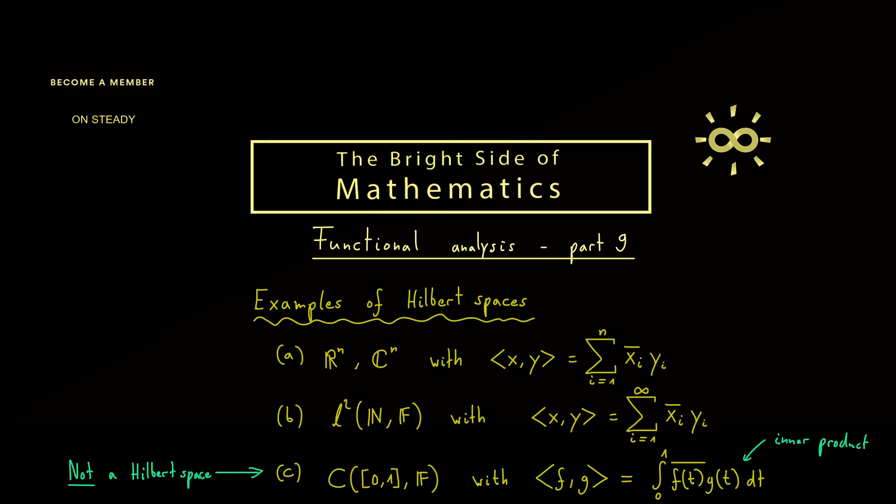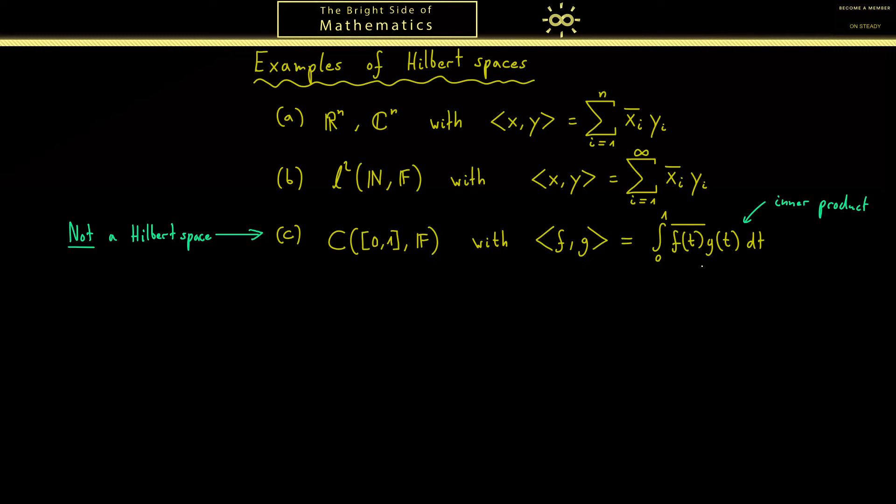First I want to show you in part b that we have a Hilbert space. There you already know the completeness. So let's discuss the inner product part here. This means that we have to check all the properties. And the first thing should always be showing that this one is a well defined map from L2 times L2 to F. This means that this limit as a series should always exist. However, for this we need some technical details, I just want to do later in the series. So, don't worry, there will be a video about that. Here we focus on the three properties of an inner product.